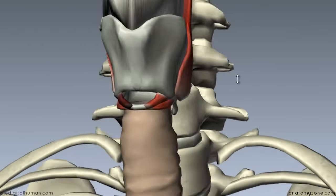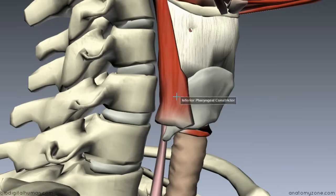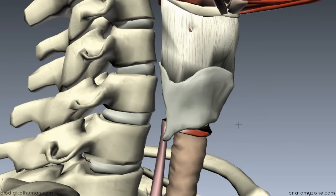Let's take a look at the action of this muscle. I'll just get rid of this muscle here, which is the inferior pharyngeal constrictor — remember this attaches along the oblique line of the thyroid cartilage. Importantly, the cricothyroid joint is one of the articulations of the laryngeal cartilages, and this muscle produces an action at this joint.